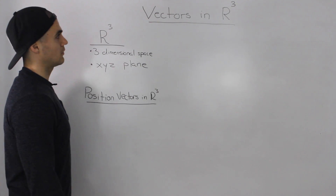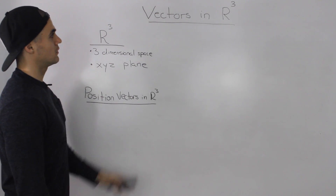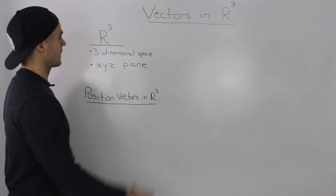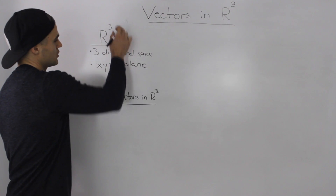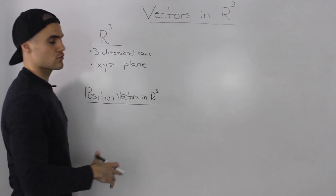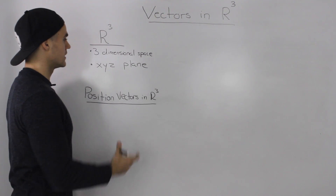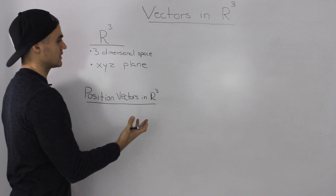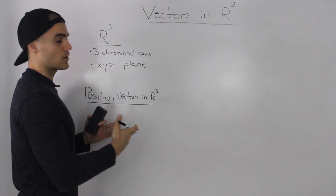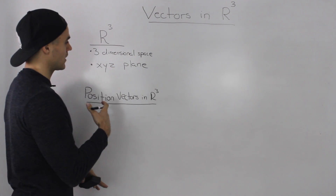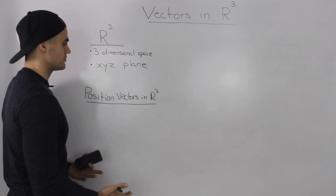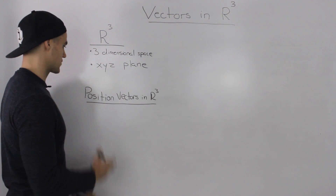What's up guys? So now we're going to be talking about vectors in R cubed. R cubed basically represents a three-dimensional space, so instead of dealing with an xy plane like we dealt with in R squared, we're going to be dealing with an xyz plane this time.